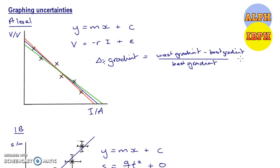And then you can multiply that by 100% to get your percentage uncertainty in your gradient. So you take your worst gradient minus your best gradient to find some sort of estimate of the absolute uncertainty, divide it by the best gradient times it by 100 to get the percentage uncertainty in your gradient.